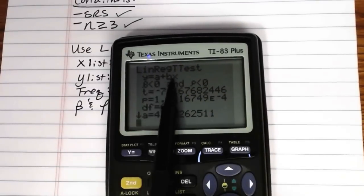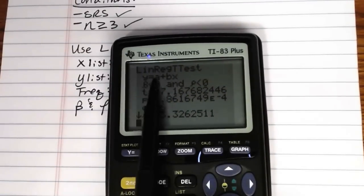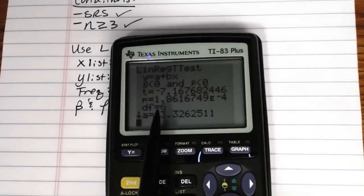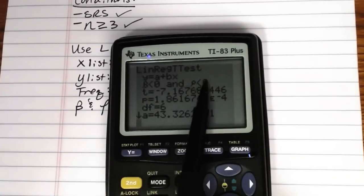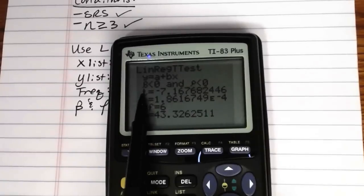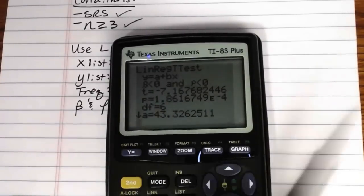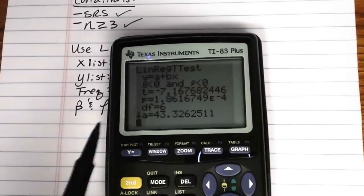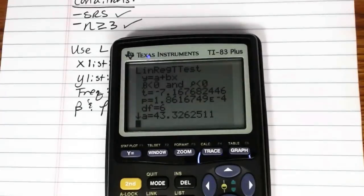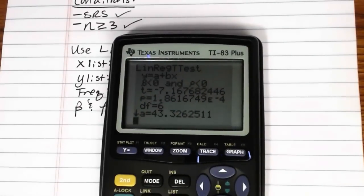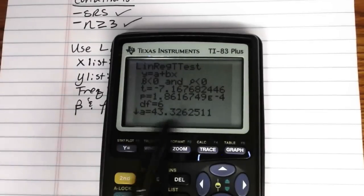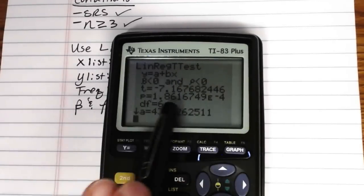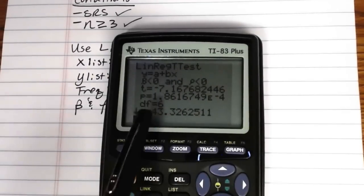And then when you run that on the calculator, you get out of screen with a lot of stuff. First, it'll tell you, here's your linear regression equation, y equals a plus bx. Here's what you're testing, beta less than zero and rho less than zero. That's what we wanted to test. Here's the t-value of your sample test statistic. That usually you would use if you were going to conclude the test by hand, or if you were using the critical region method for hypothesis testing, which we're not doing that. We're using the p-value method. So here's our p-value. That's actually how we're going to conclude the test.